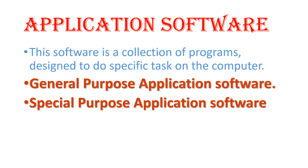Now let's see application software. Application software is a collection of programs designed to do specific tasks on the computer. Just like a wall clock that does only one thing — it shows the time — application software helps you in doing specific work. For example, you use the paint program to draw, and if you want to do sums, you use the calculator program. There are two categories: general purpose and special purpose application software.